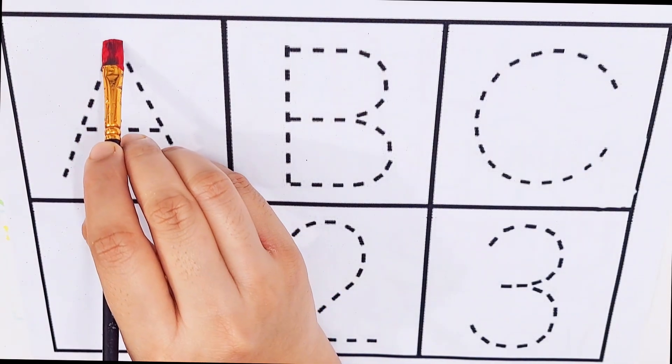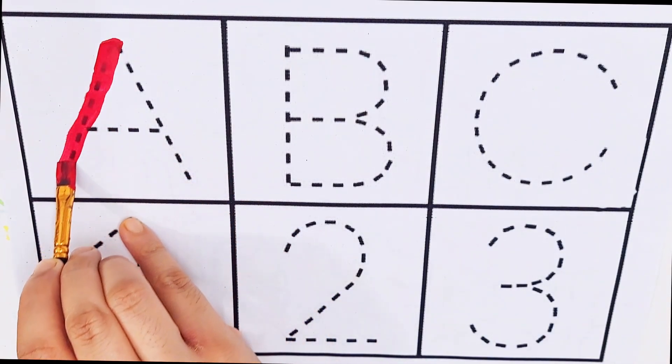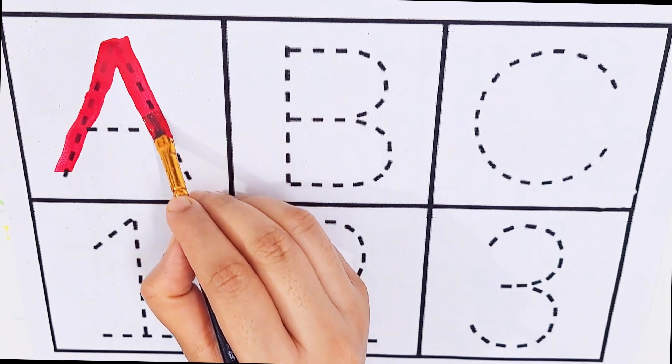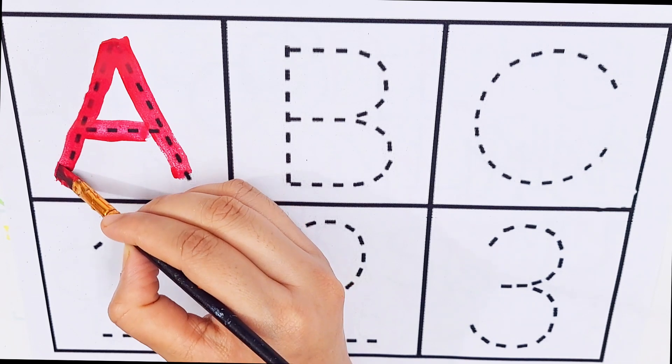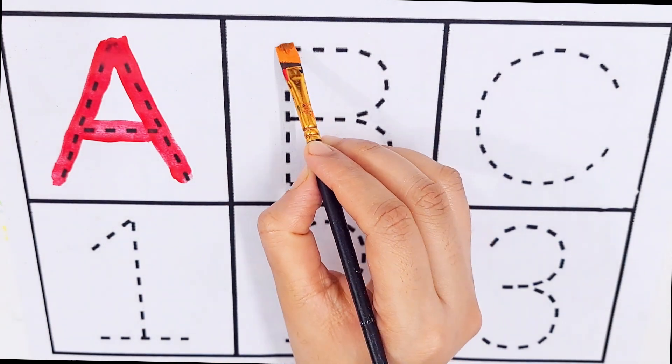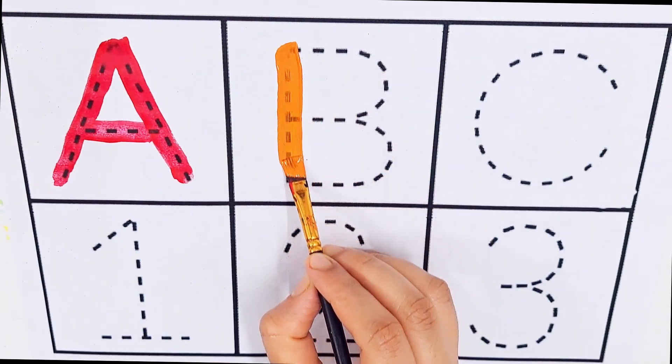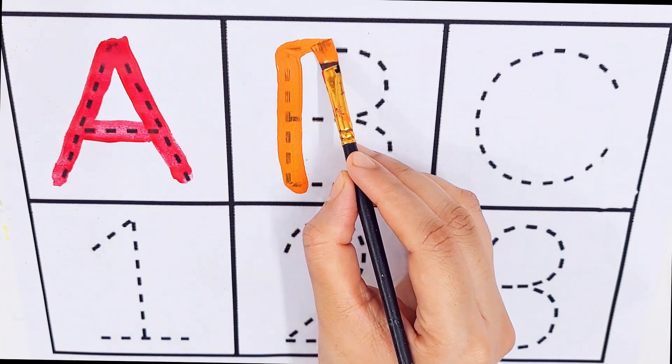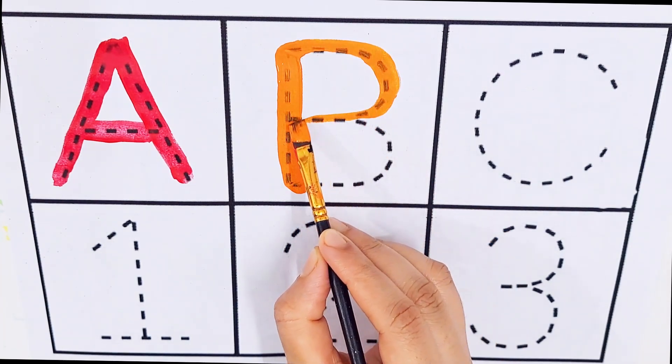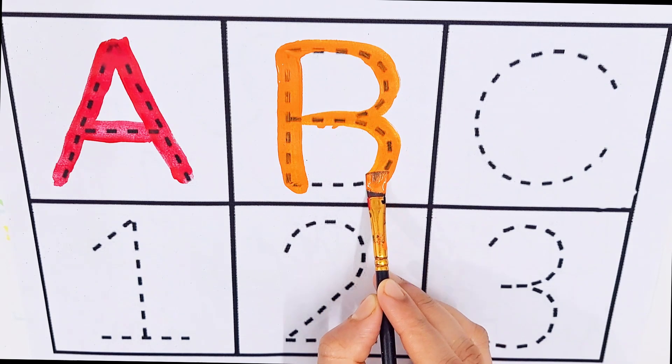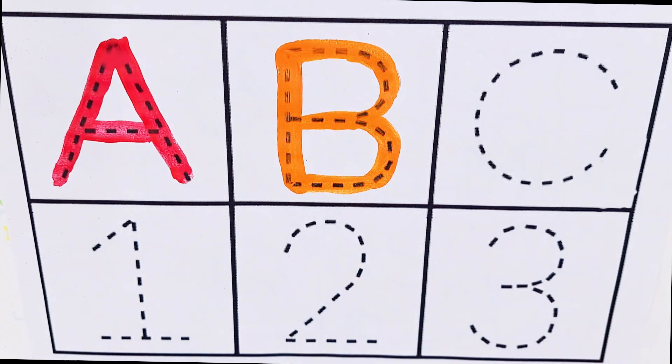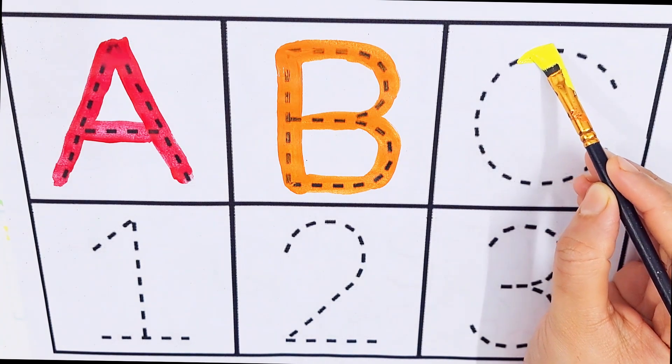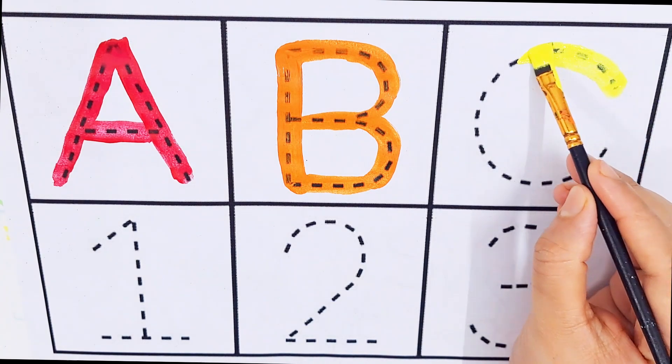Red color: A, A for apple. Orange color: B, B for bus. Yellow color: C, C for candy.